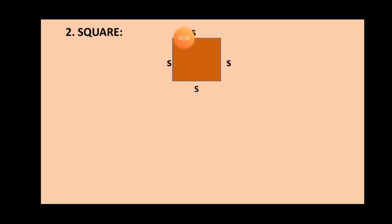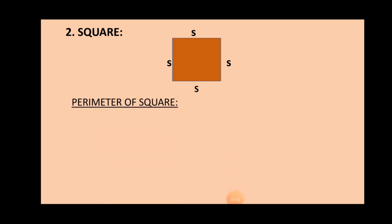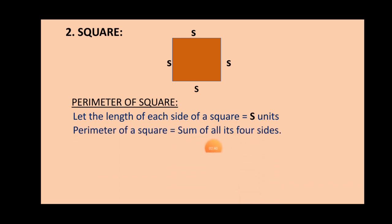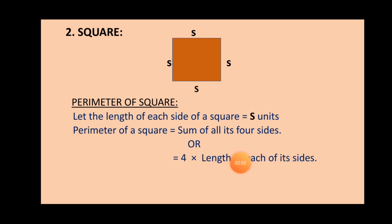Now let us learn about another shape, that is a square. Look at this figure on the screen — it is a four-sided closed figure with all sides of equal measure and each angle equal to 90 degrees. The perimeter of a square defines its total distance. If the length of each side is S units, we take the sum of all four sides, or multiply the side length by four.